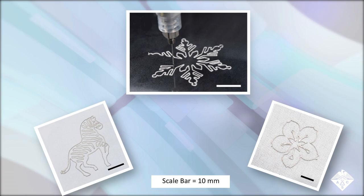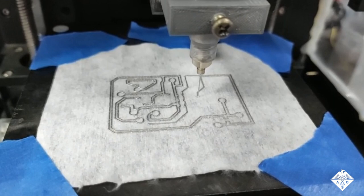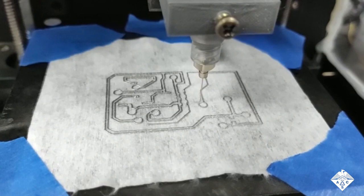But first, scientists must find a way to cost-effectively print intricate but flexible circuits onto a variety of fabrics. Now, researchers reporting in ACS Applied Materials and Interfaces have developed a conductive 3D printing ink that's made of liquid metal droplets coated with alginate, which is a polymer derived from algae.